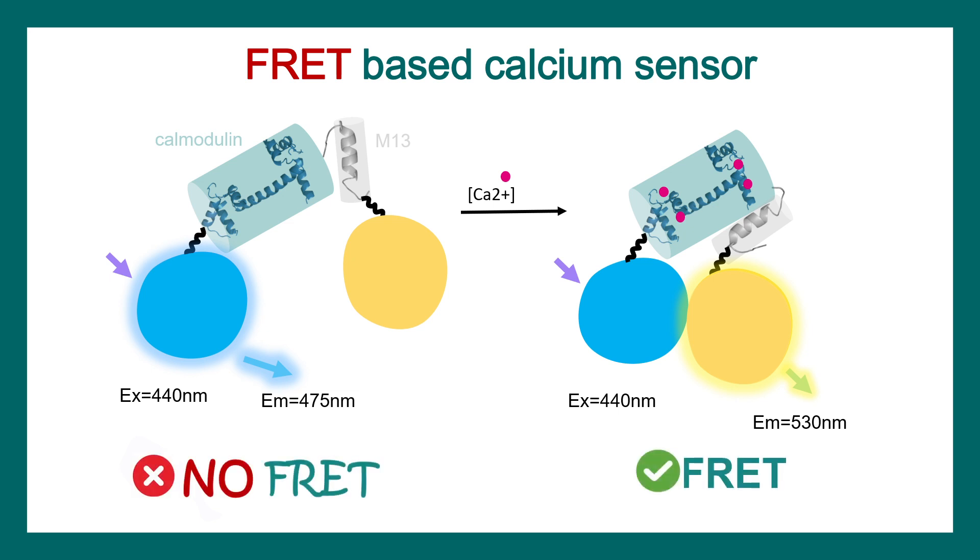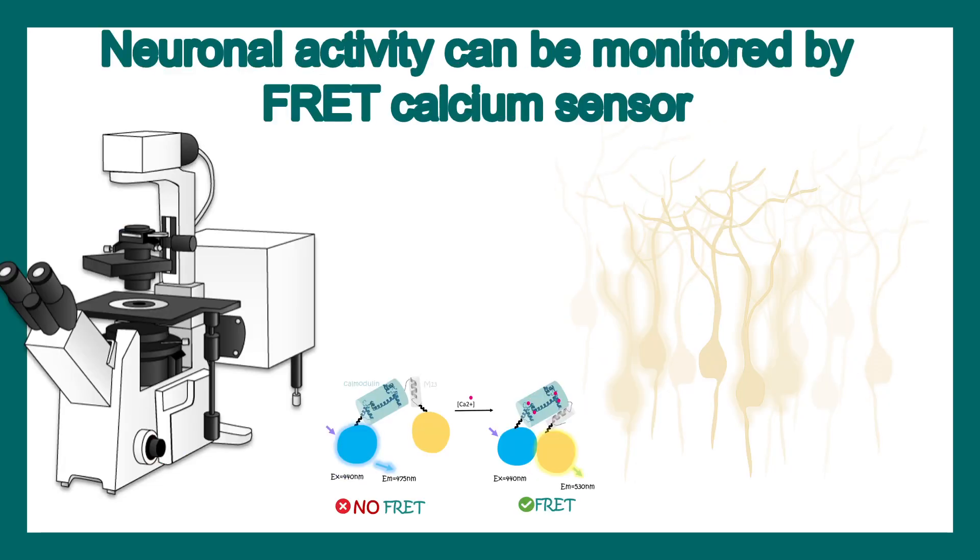FRET tells us about the calcium concentration in the cell. FRET happened, that means there is an elevation in calcium response. Using live imaging, and that live imaging can be done in confocal, 2-photon or any other setup, one can also monitor neuronal activity. Obviously, FRET can be used in many other particular purposes.